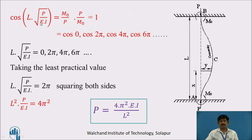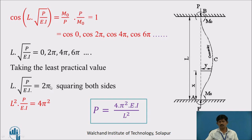cos(L√(P/EI)) = 1 when L√(P/EI) = 0, 2π, 4π, 6π, etc. Taking the least practical value of 2π: L·√(P/EI) = 2π. Squaring both sides: L²·(P/EI) = 4π². Therefore, P = 4π²EI/L². This is the crippling load when both ends of the column are fixed.